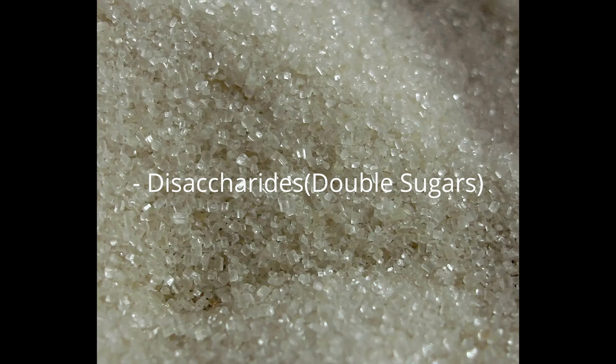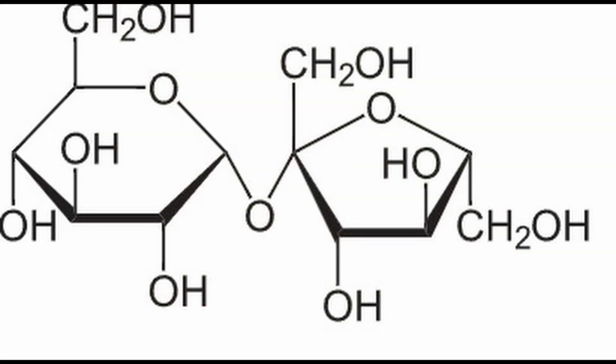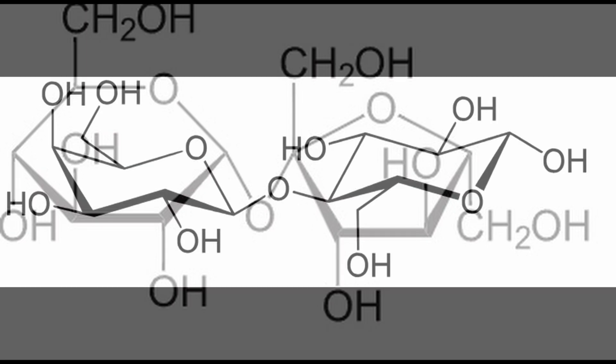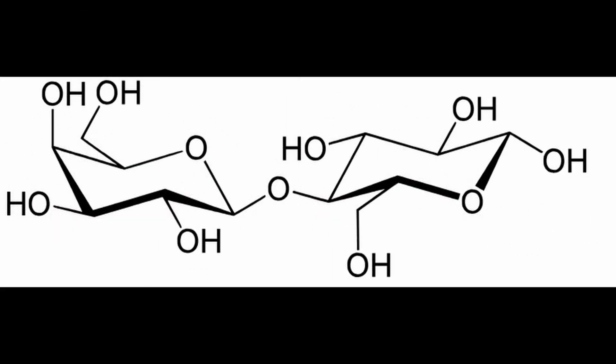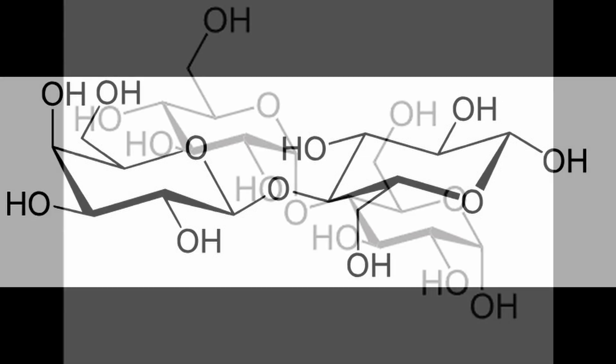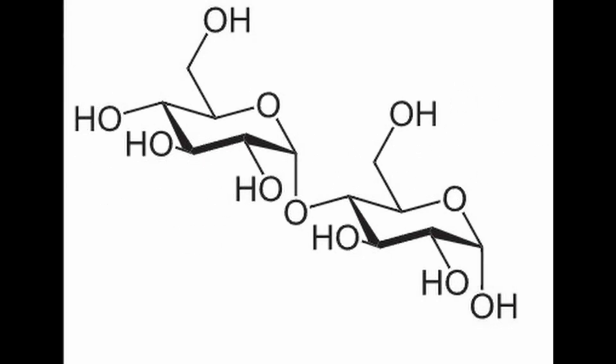Then you have the disaccharides — double sugars formed by a combination of two monosaccharides linked by a glycosidic bond. Examples are sucrose, or table sugar, which is glucose plus fructose; lactose, or milk sugar, which is glucose plus galactose; and maltose, or malt sugar, which is glucose plus glucose.